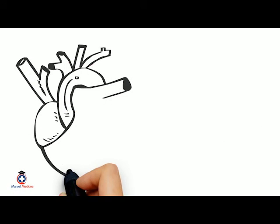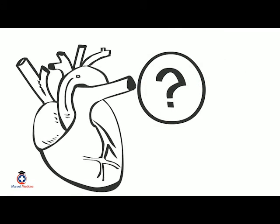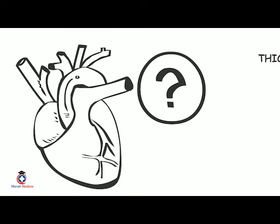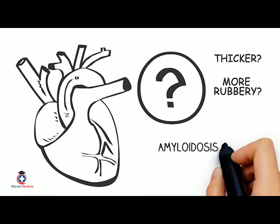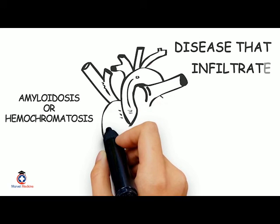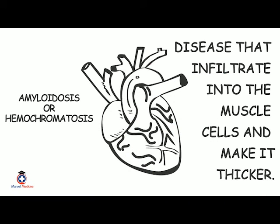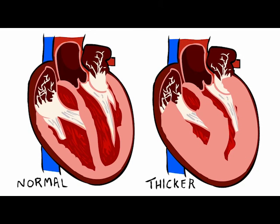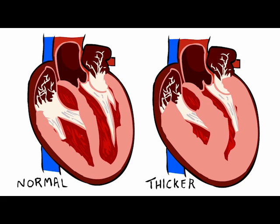Now consider the compliance of the heart. Pathologies like amyloidosis and hemochromatosis are infiltrative diseases that deposit material into myocardial cells, making the heart thicker and less easily stretchable. Comparing a normal ventricle to one with infiltrative disease: filling both with 50 milliliters of blood, the less compliant, thicker heart has a higher pressure.